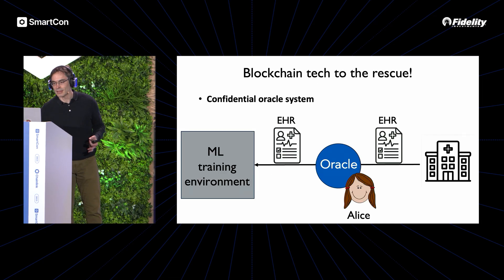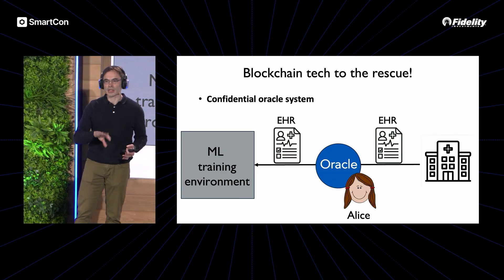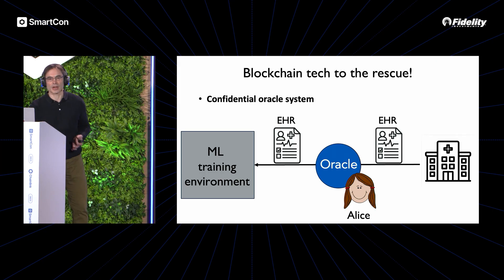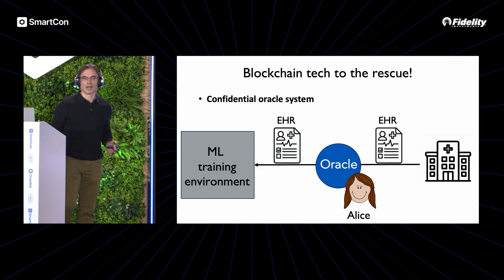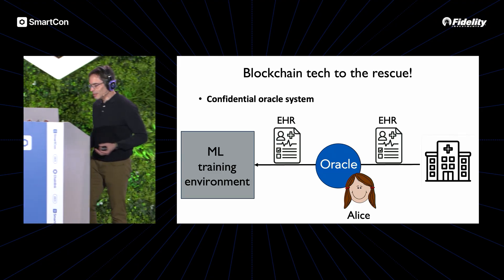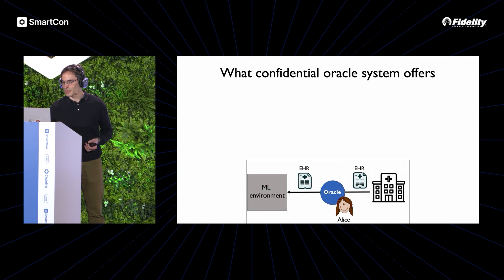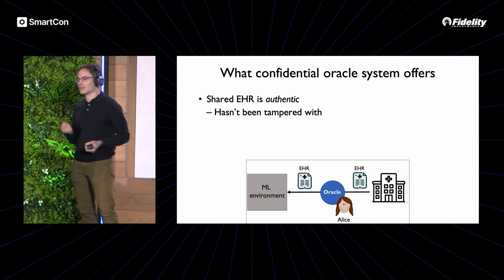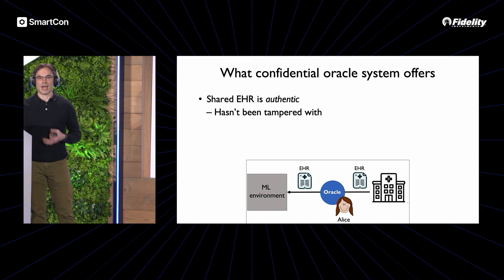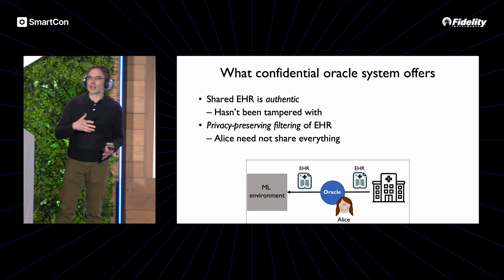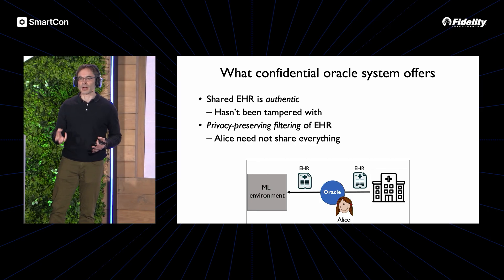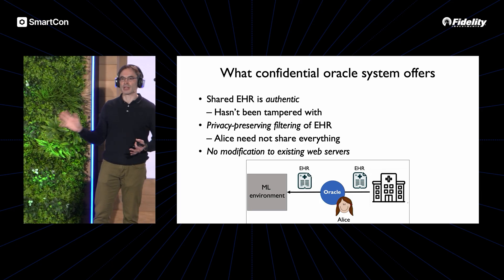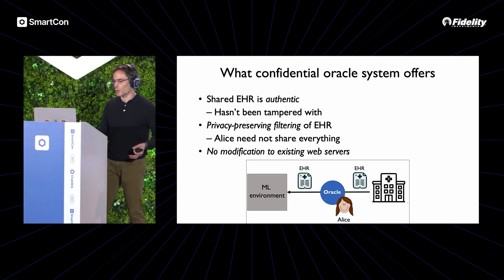This is where blockchain technology can be helpful — and not just in a blockchain context, but in a general sense. If we plug in a confidential oracle system, like Town Crier or Confidential HTTPS in the CRE as introduced yesterday, we can ensure that Alice's electronic health record is authentic, hasn't been fabricated or tampered with. Alice can also do privacy-preserving filtering and release only the data she wants. All of this can be done with no modification to existing web servers — that's the beauty of confidential oracle systems.